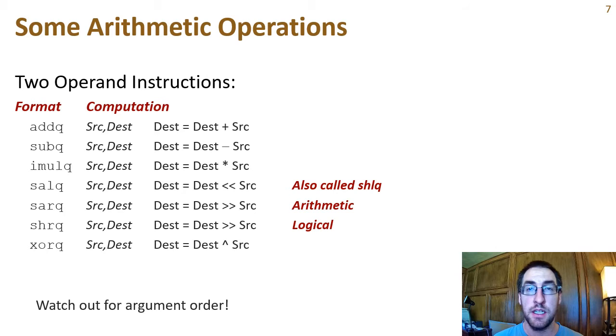The XORQ instruction does bitwise exclusive OR of the destination and source. This means each bit of destination is XORed with the bit in the same location in source and gets written back to the destination. The ANDQ does bitwise AND, and the ORQ does bitwise inclusive OR.